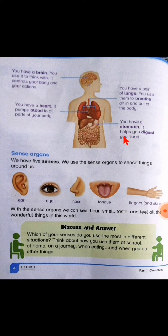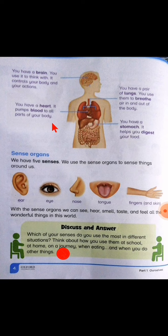You have a stomach — it helps you digest your food. ہمارا brain ہمارا main part ہے۔ ہم اپنے brain سے سوچتے ہیں، ہمارے actions control ہوتے ہیں۔ ہمارا heart ہمارے blood کو pump کرتا ہے اور ہمارے پورے body parts تک blood کو supply کرتا ہے۔ اور lungs ہمیں breathe کرنے میں، سانس لینے میں help کرتا ہے۔ پھر ہمارا stomach آتا ہے جو ہم جو بھی کھاتے ہیں food کو digest کرتا ہے۔